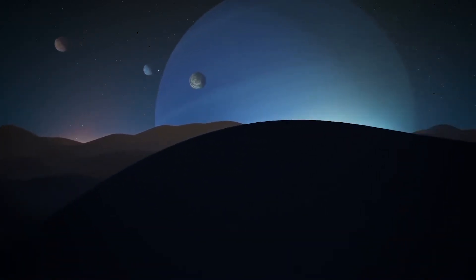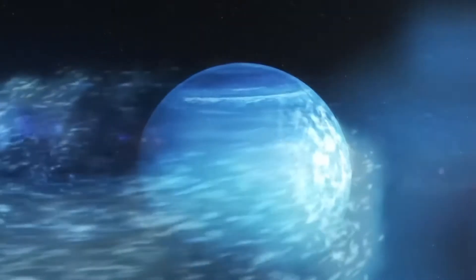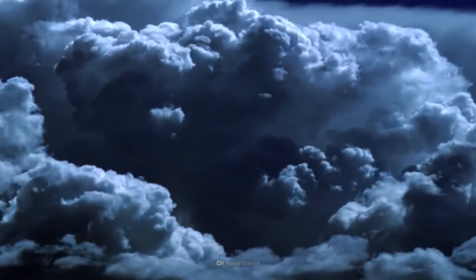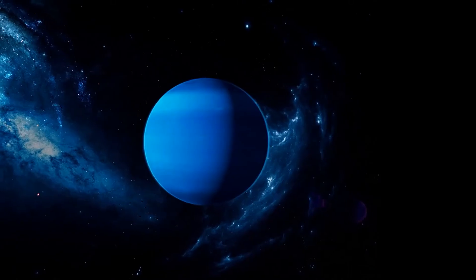Cold and hostile environment: Neptune is a gas giant with an extremely cold atmosphere. Temperatures can plummet to around minus 200 degrees Celsius (minus 328 degrees Fahrenheit), or even colder. This extreme cold would affect any spacecraft or probe attempting to enter the atmosphere.